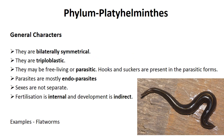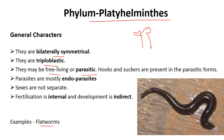Then phylum Platyhelminthes — 'platy' means flat, so these are flatworms. Taenia (tapeworm) and Fasciola belong to phylum Platyhelminthes. They are bilaterally symmetrical and triploblastic. They are free-living or parasitic. When parasitic, they have hooks or suckers in their mouth to attach to the host body. Most of them are endoparasites. Sexes are not separate and fertilization is internal; development is totally indirect. Example: flatworms.